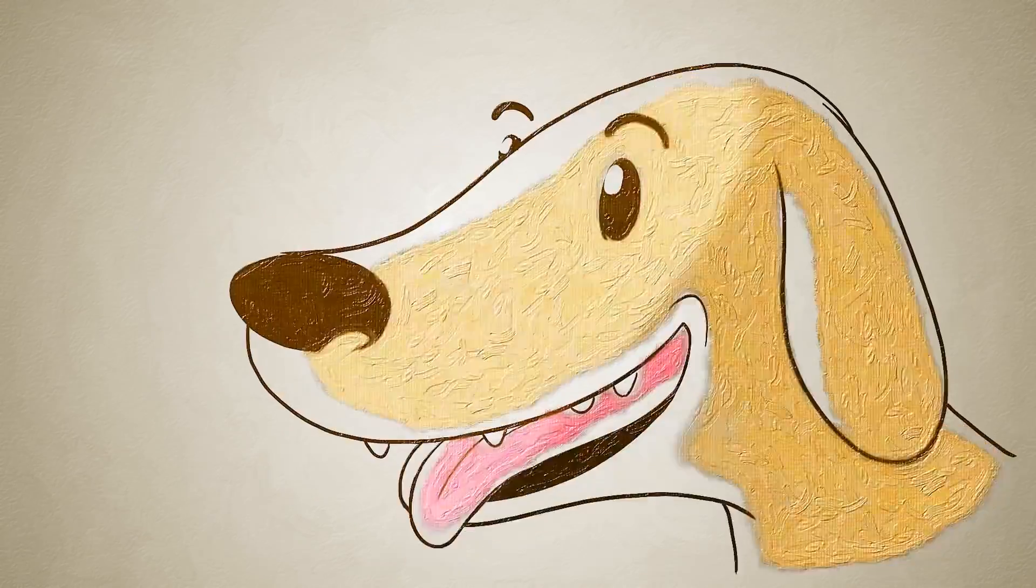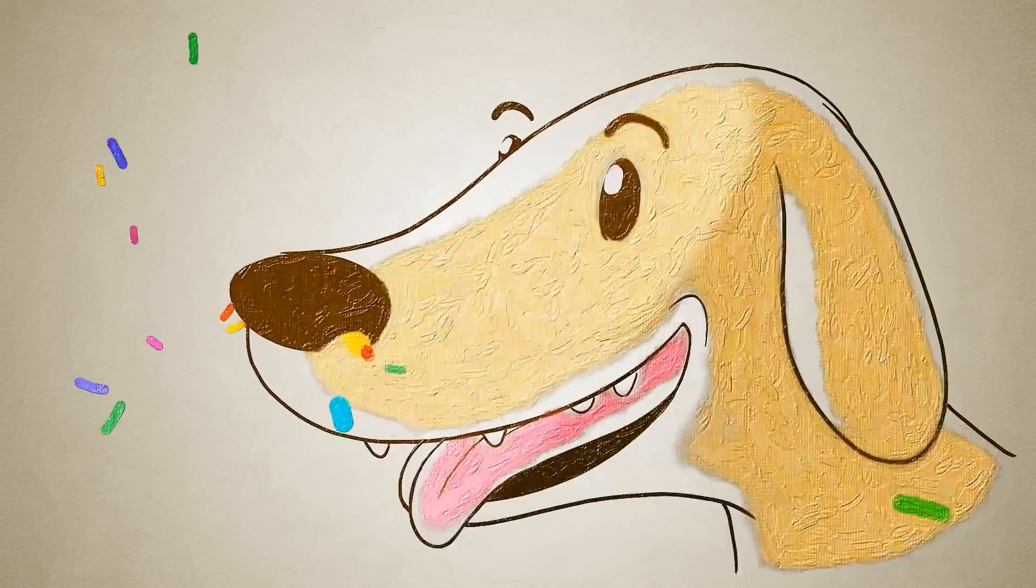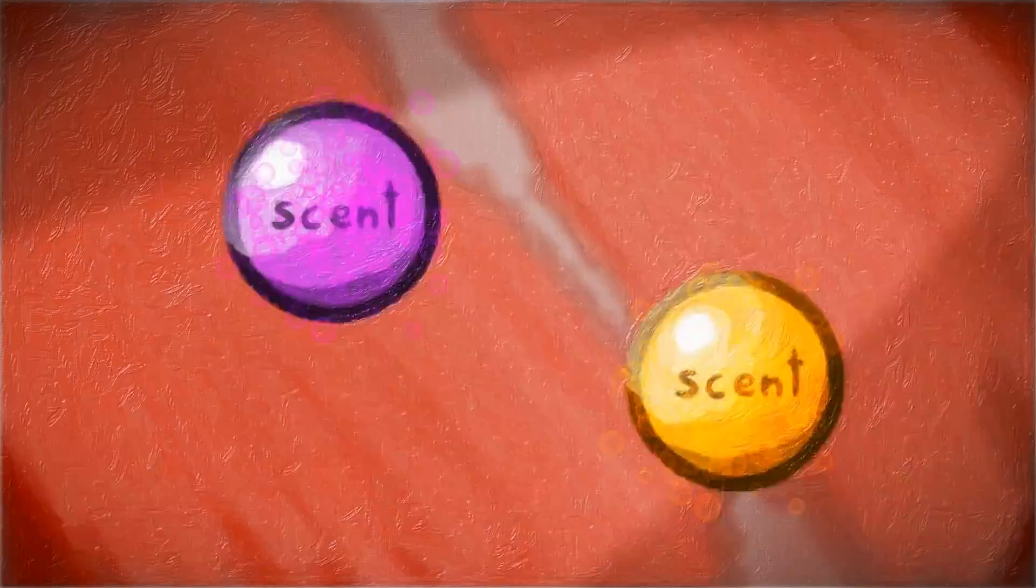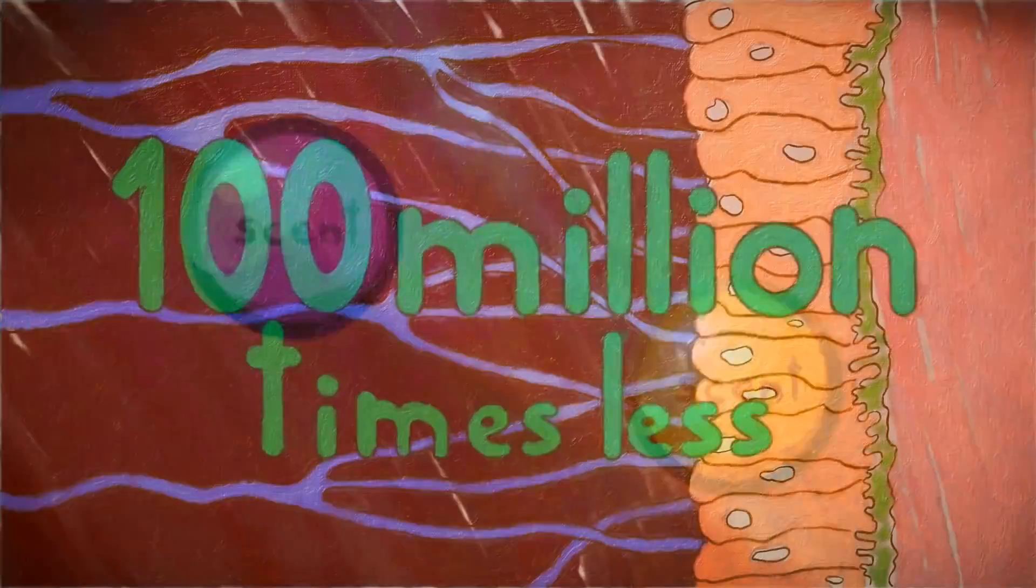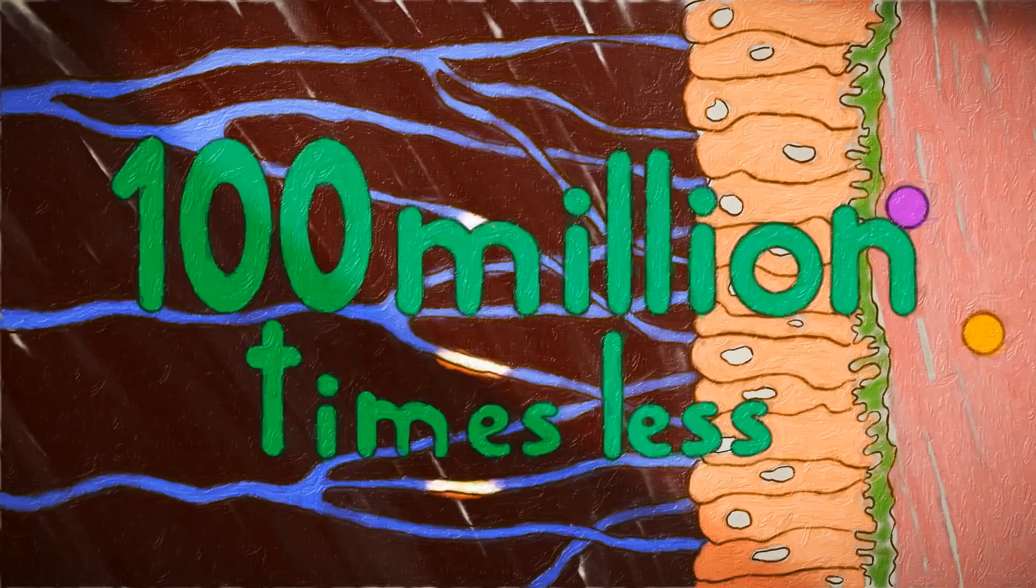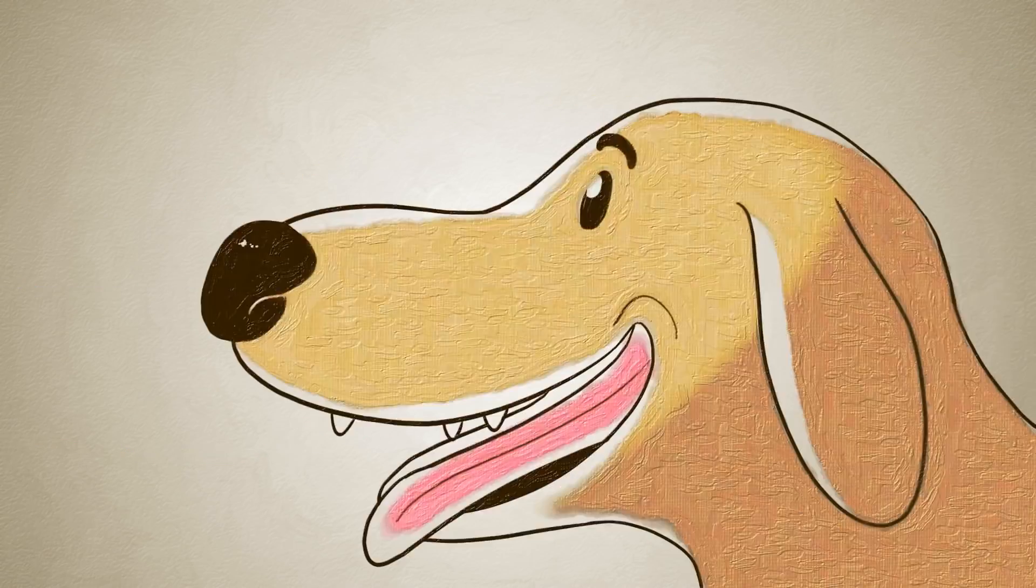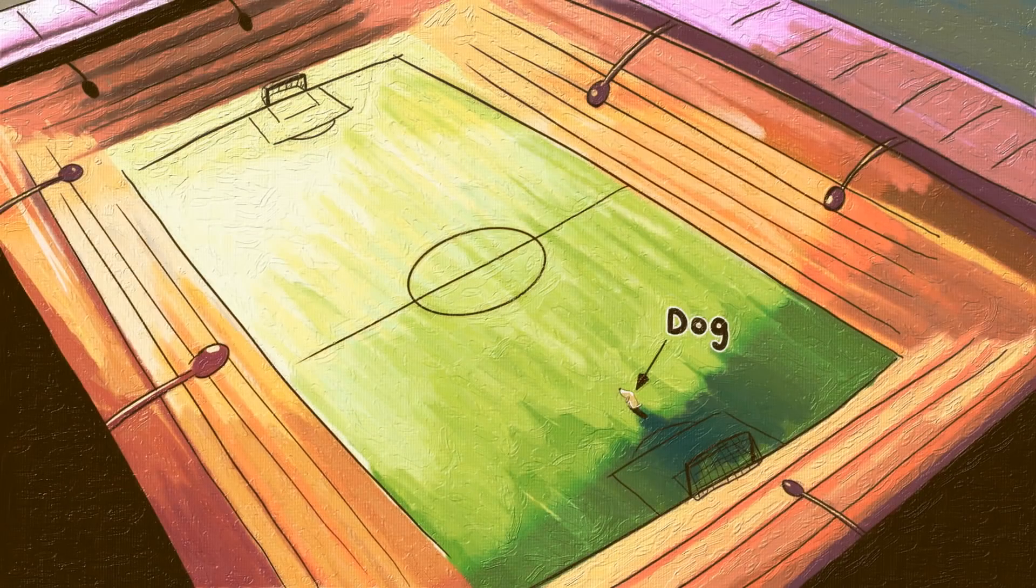All of this allows dogs to distinguish and remember a staggering variety of specific scents, at concentrations up to 100 million times less than what our noses can detect. If you can smell a spritz of perfume in a small room, a dog would have no trouble smelling it in an enclosed stadium and distinguishing its ingredients to boot.